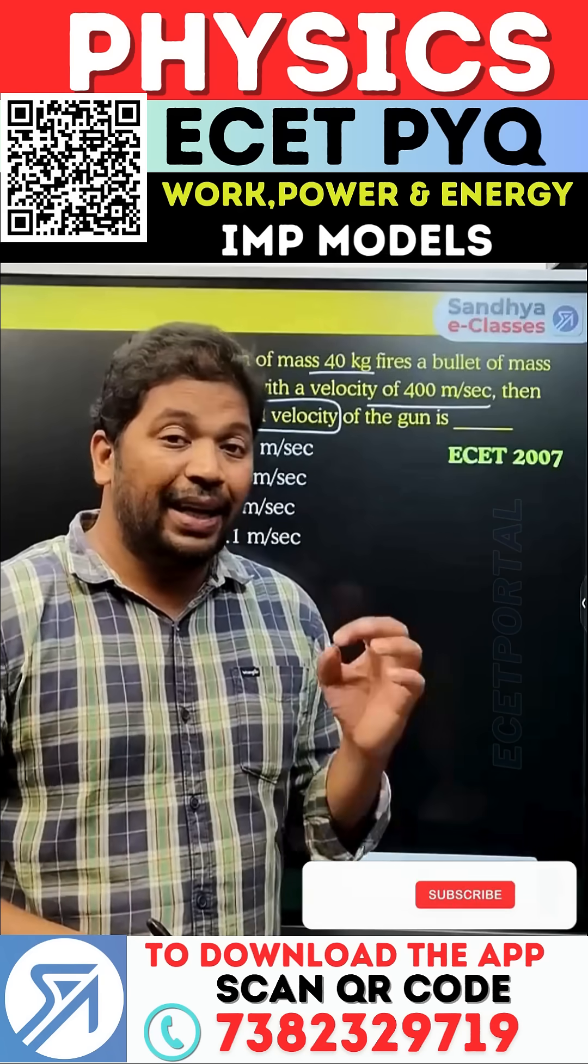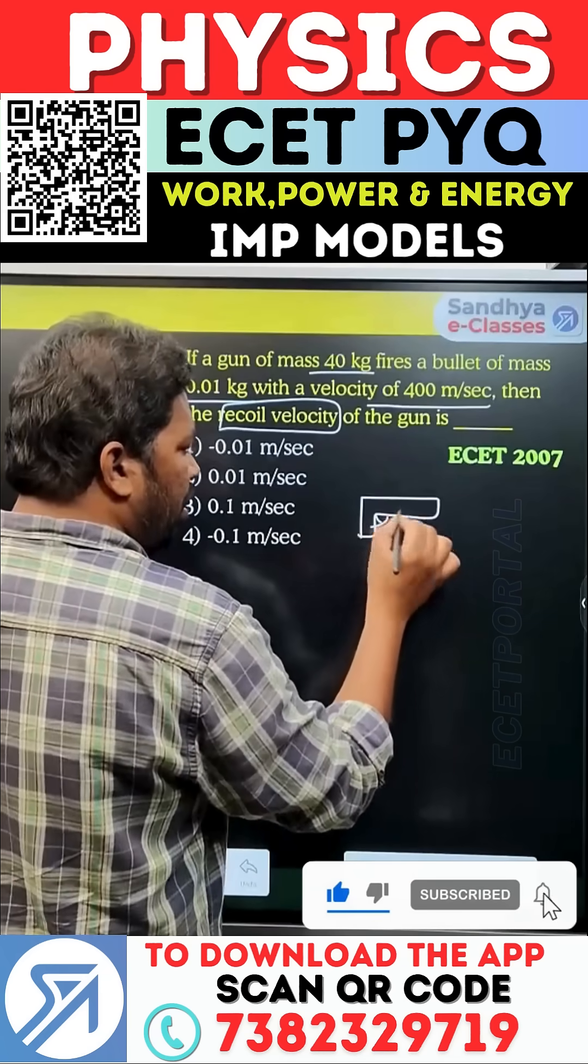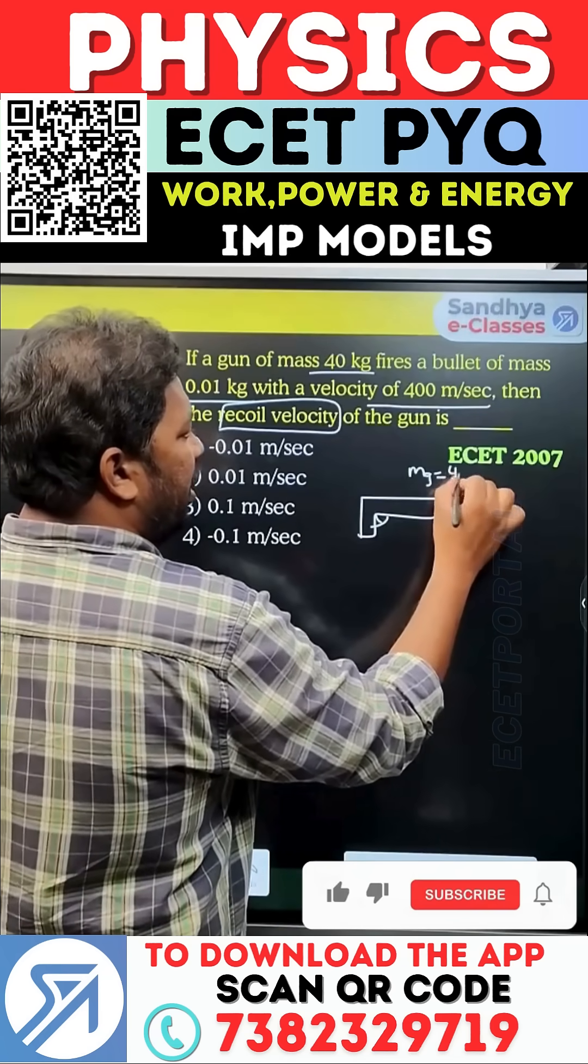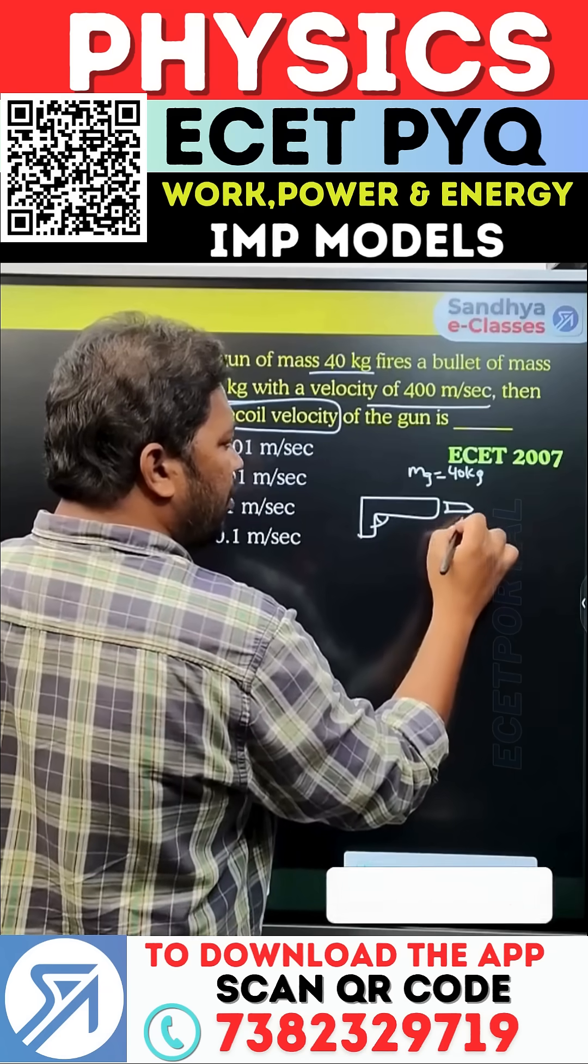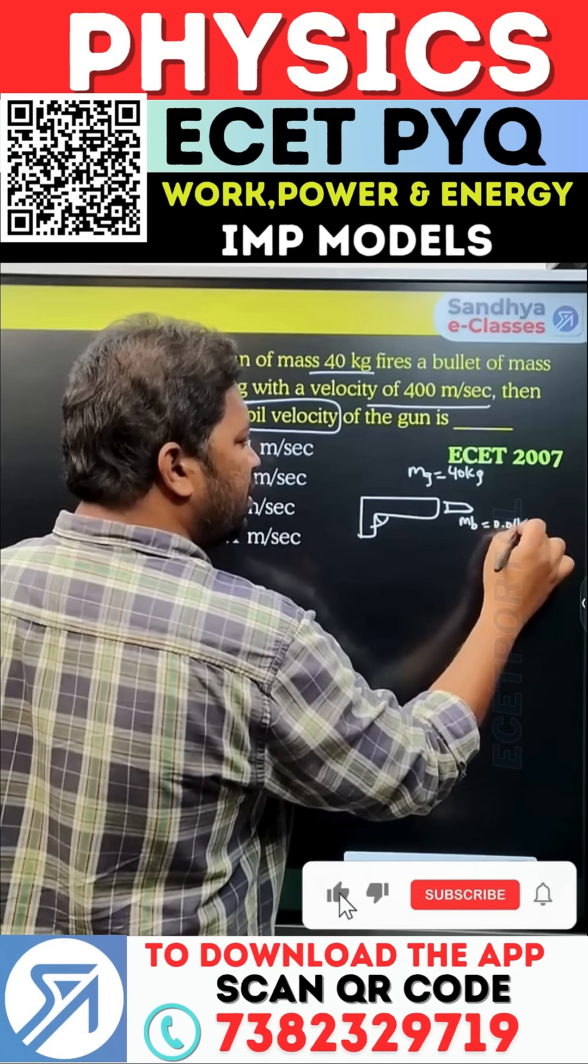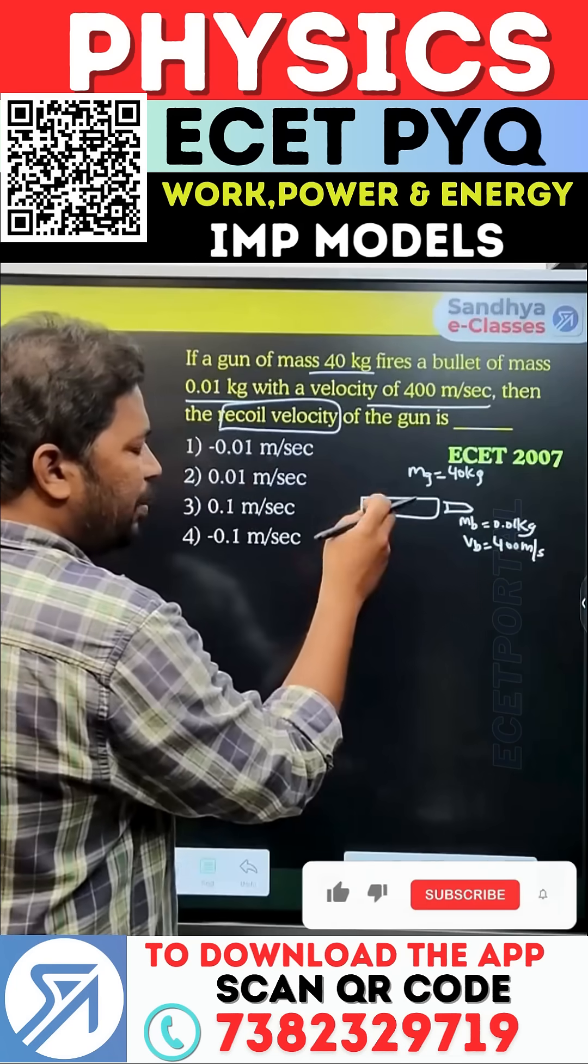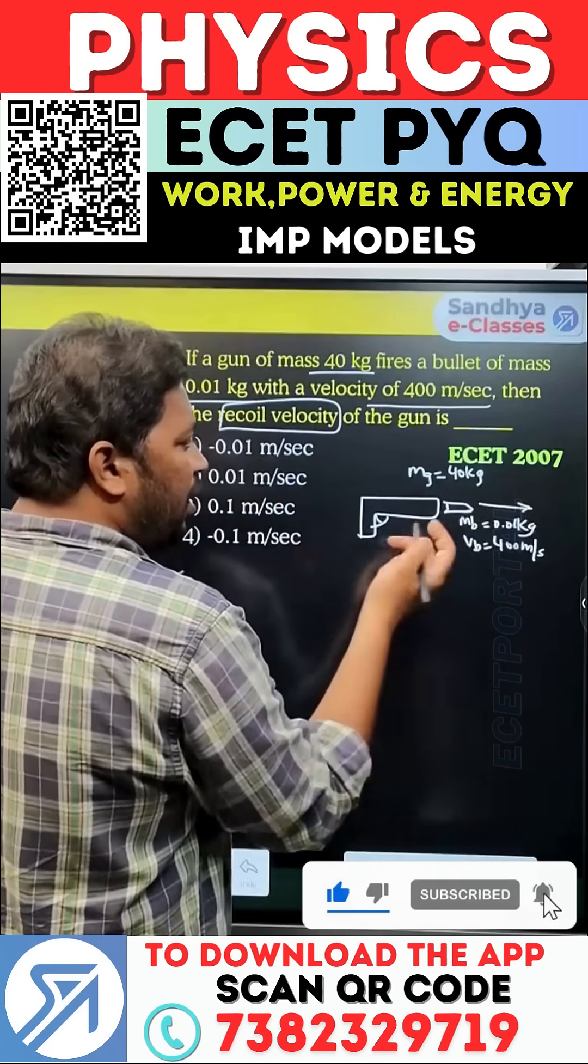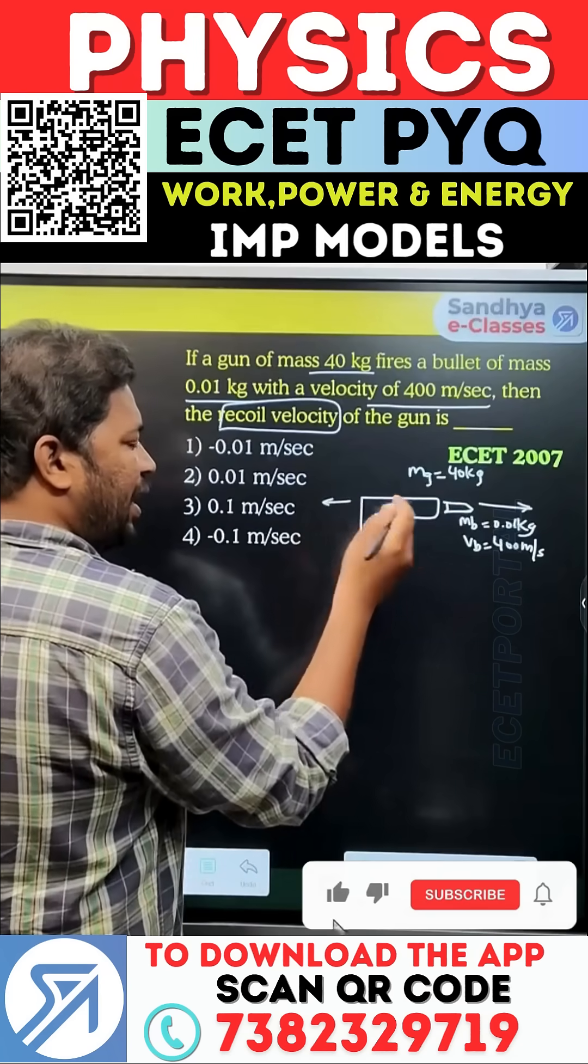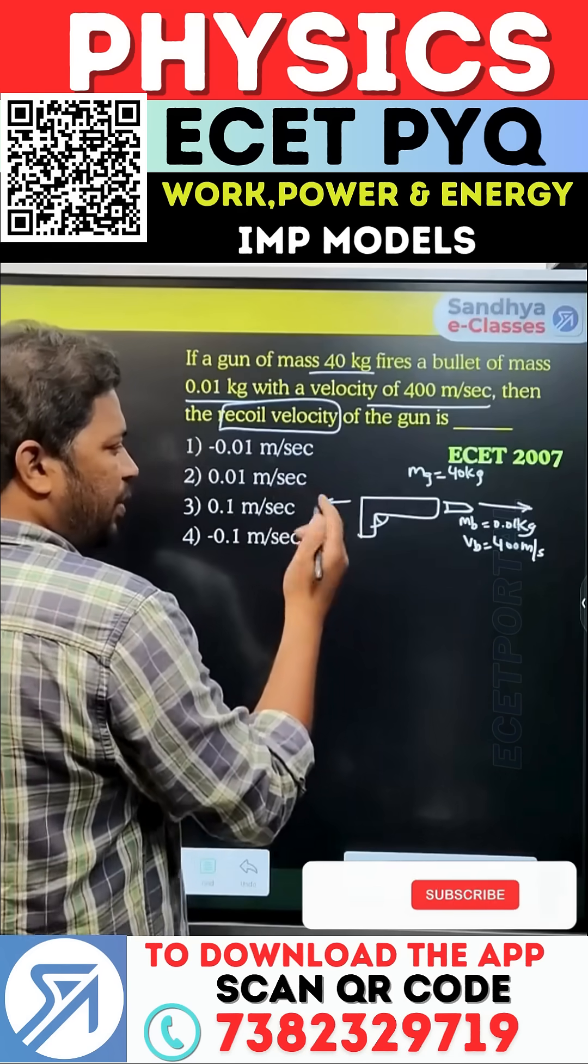This is an important model. When you trigger the gun, you fire the bullet of mass 0.01 kg with velocity 400 meters per second. At the same time, the bullet pulls the gun backward in the opposite direction due to recoil.